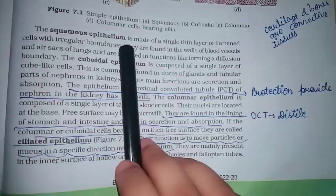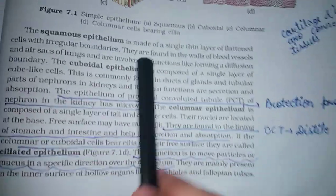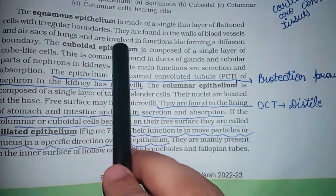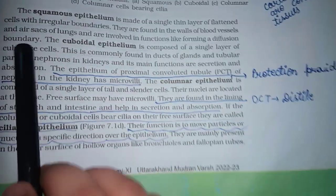The squamous epithelium is made of a single thin layer of flattened cells with irregular boundaries. They are found in the walls of blood vessels and air sacs of lungs and are involved in functions like forming a diffusion boundary.